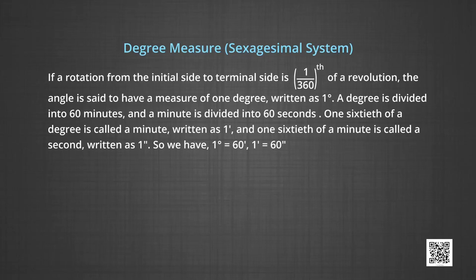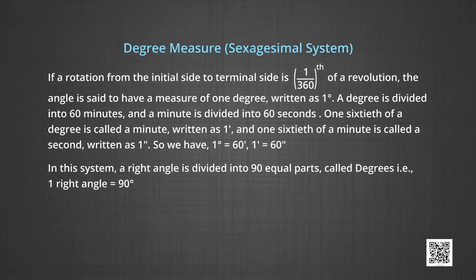Just as in time, 1/60th of a degree is called a minute, written as 1′, and 1/60th of a minute is called a second, written as 1″. So we have 1 degree is equal to 60 minutes and 1 minute is equal to 60 seconds. In this system, a right angle is divided into 90 equal parts called degrees, that is one right angle is equal to 90 degrees.